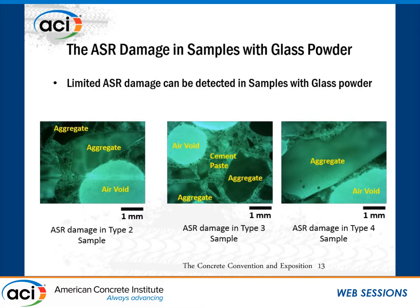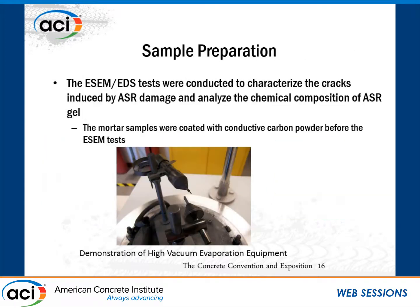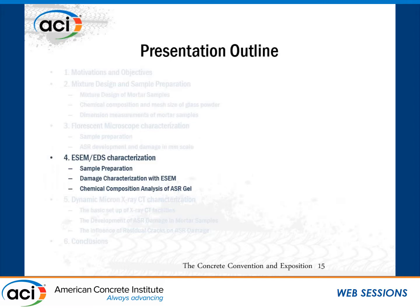We further examined Type 2, Type 3, and Type 4 samples containing glass powder with the microscopy test. It is clear that almost undamaged aggregates can be found even in areas close to air voids, where the alkaline pore solution can easily penetrate. However, the generated ASR gel can still be observed in these three sample types. This is because the expansion rate at 14-day age still exceeds the 0.1% expansion limit recommended by the ASTM standard.